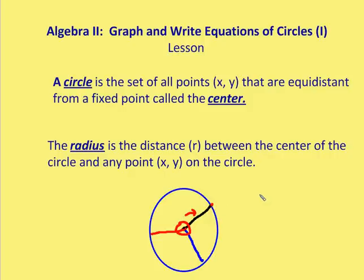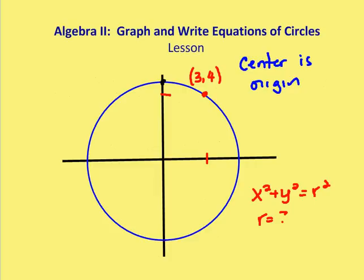So we can figure out what the equation is, first by knowing the center, and then by knowing the radius. So these first problems are going to have the center at the origin, so we don't have to worry about modifying the equation for a circle just yet, based on a translated circle. We'll do that in another lesson.